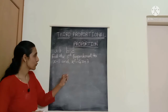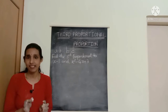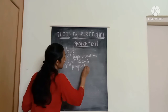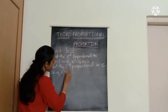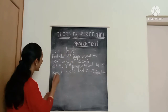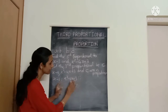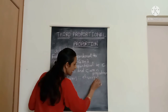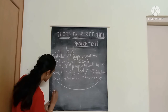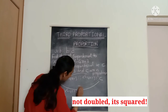Now let's find the third proportional to (x minus 1) and (x squared minus 4x plus 3). Here we have algebraic expressions, but the method is the same. Let the third proportional be C, so x minus 1, x squared minus 4x plus 3, and C are in proportion. Using the proportionality statement: (x minus 1) is to (x squared minus 4x plus 3) as (x squared minus 4x plus 3) is to C. Applying the product of extremes equals product of means: (x minus 1) times C equals (x squared minus 4x plus 3) squared.